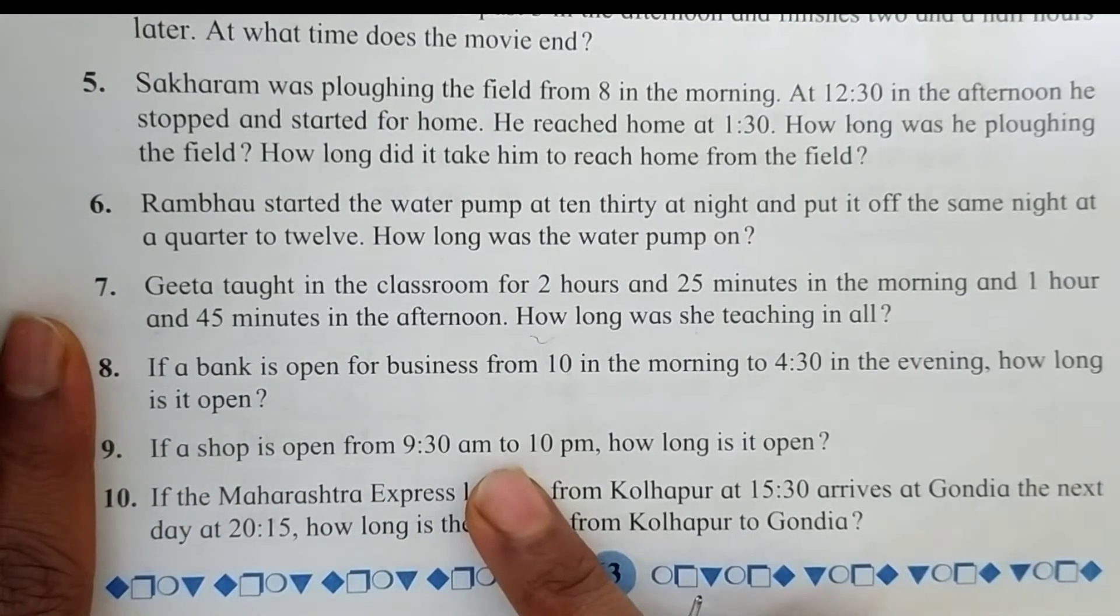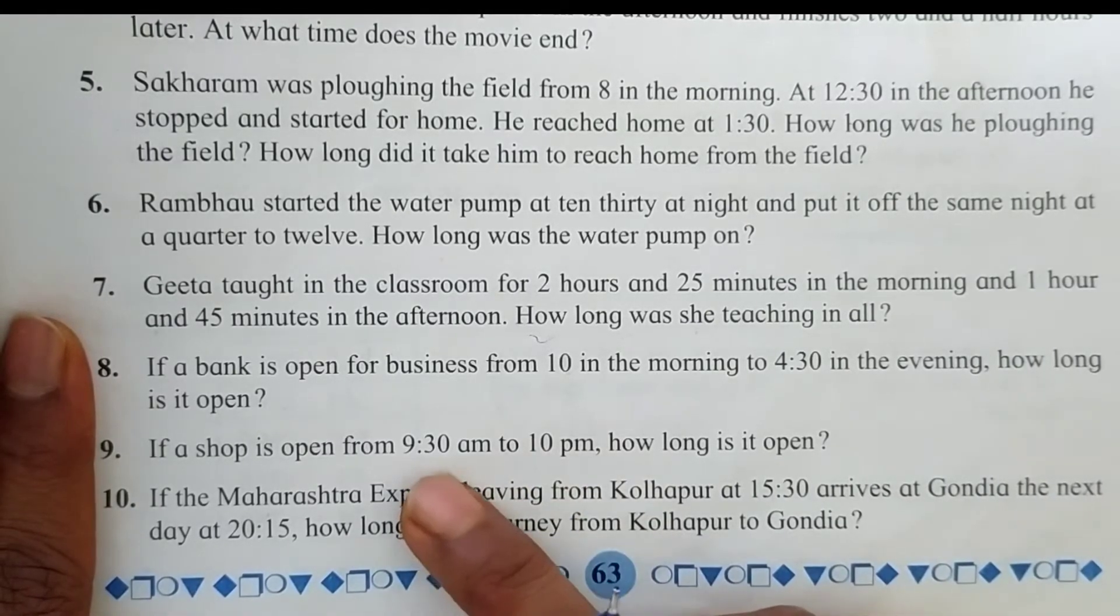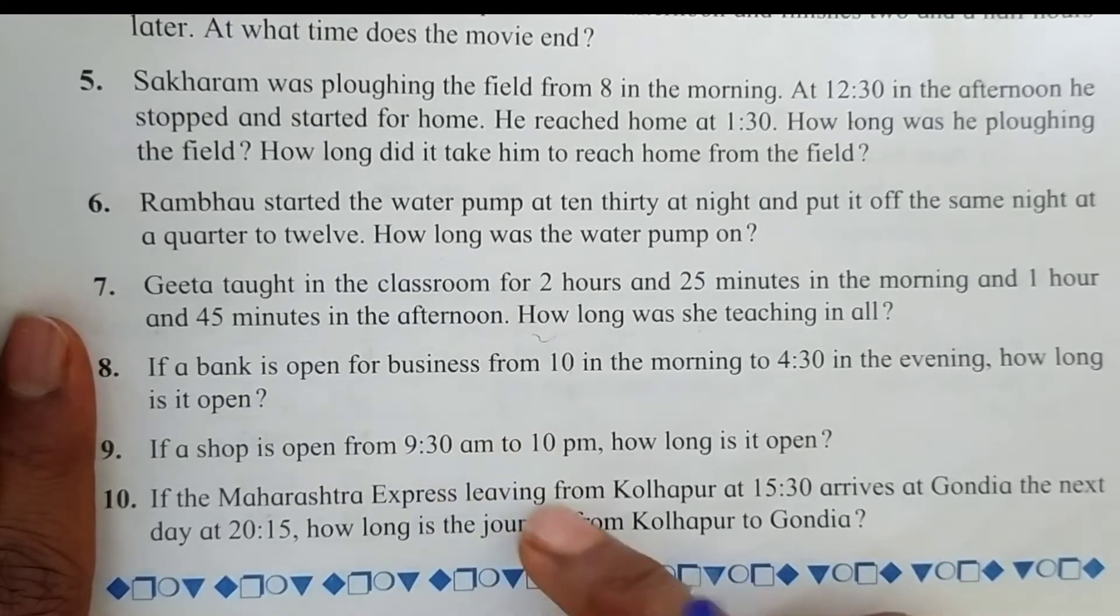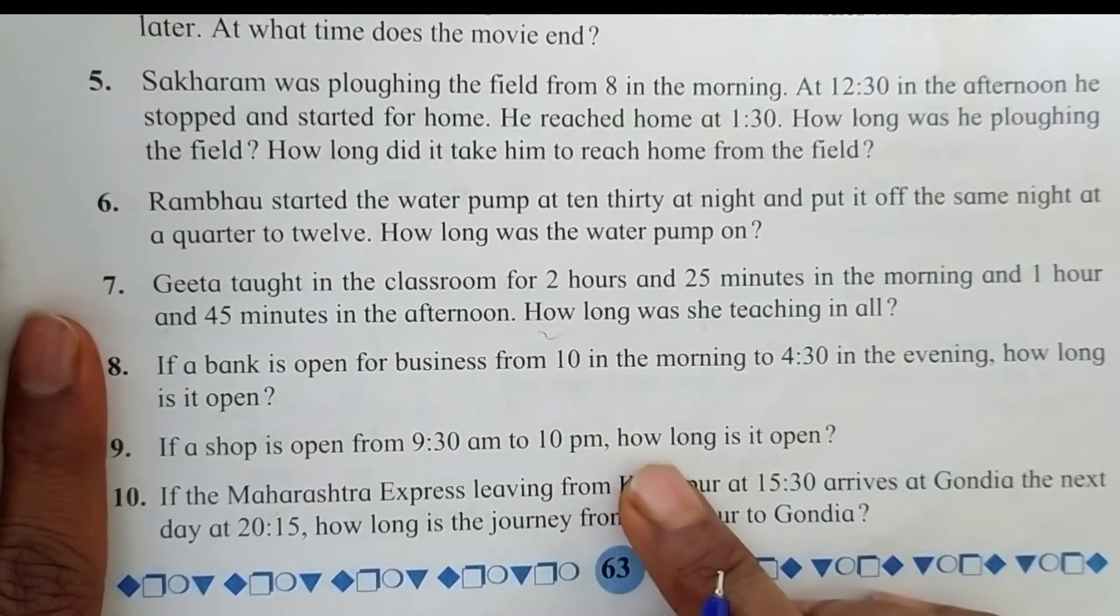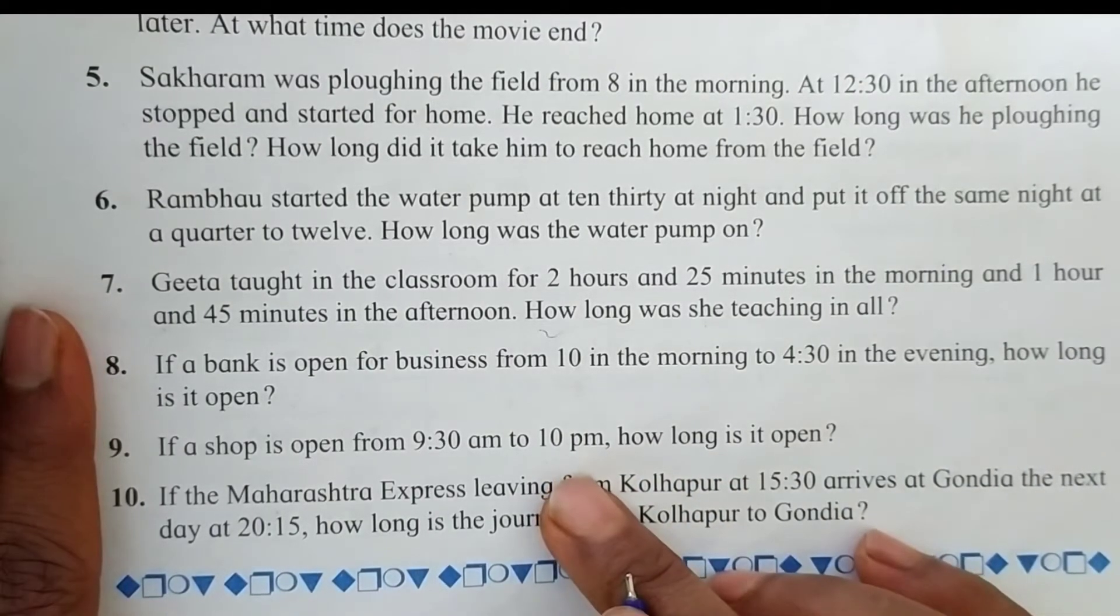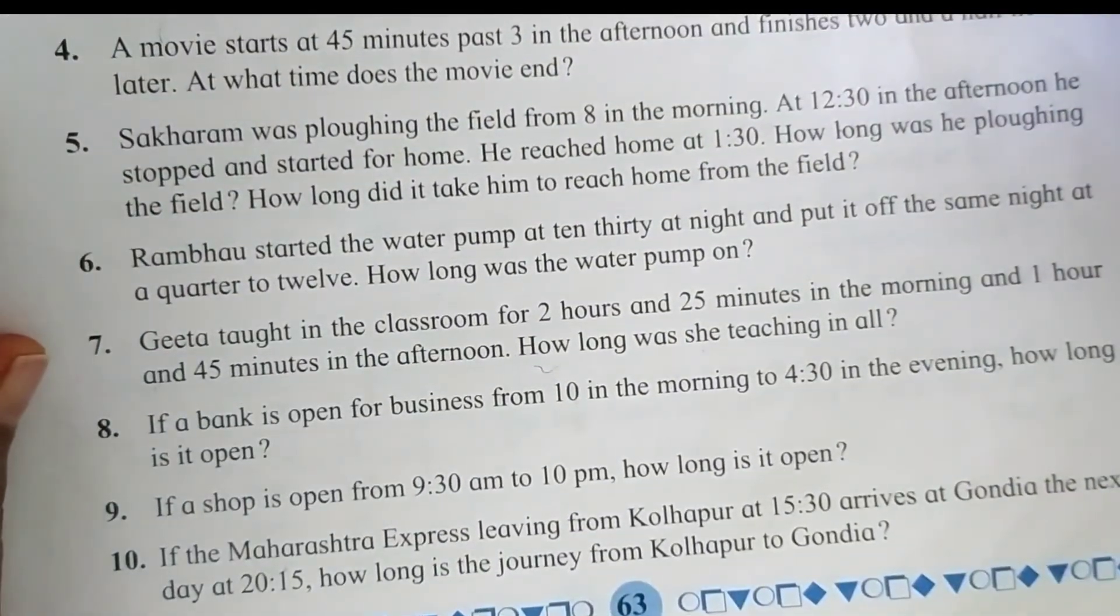If a shop is open from 9:30 AM, means ante-meridiem, to 10 PM, means post-meridiem. Here AM means this time indicates morning and PM indicates night. How long is it open? 10 PM, so it's night now. So let's find the total opening time of shop.